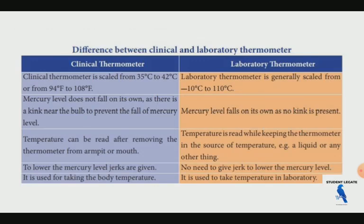Differences: The clinical thermometer range is 35 degrees Celsius to 42 degrees Celsius. The laboratory thermometer range is minus 10 degrees Celsius to 110 degrees Celsius. The clinical thermometer has a kink which allows the mercury reading to be retained after removal from the patient.